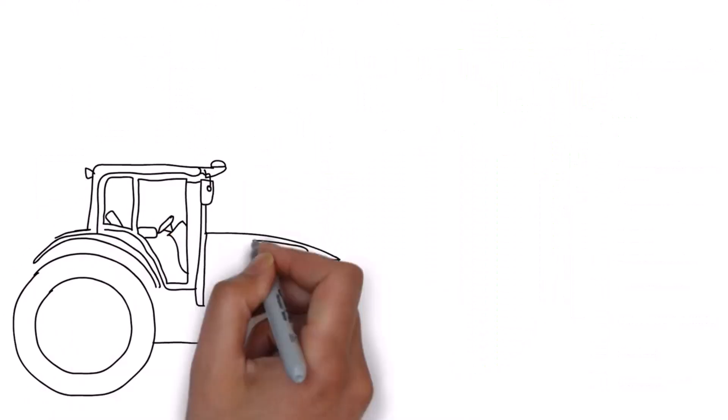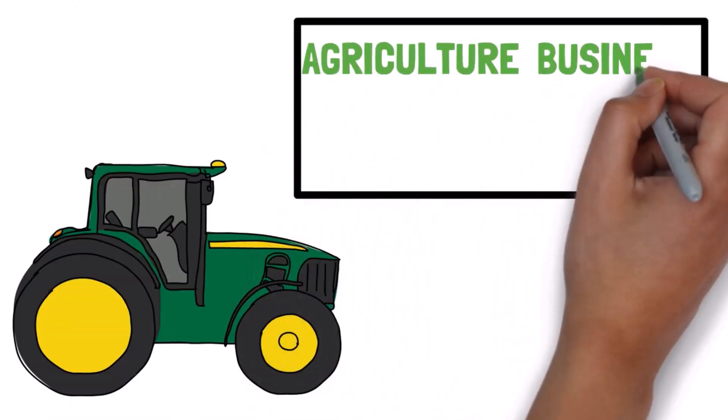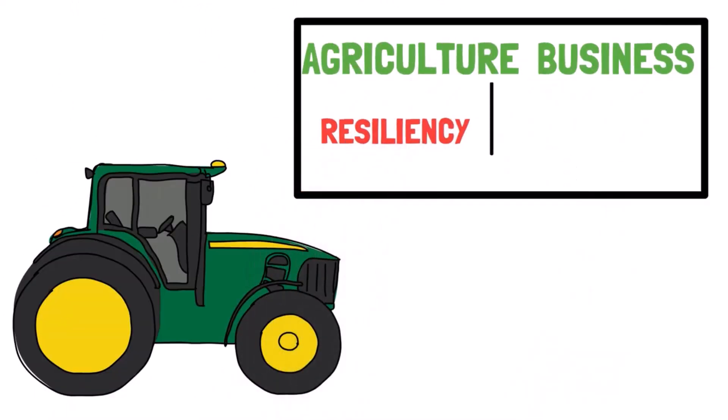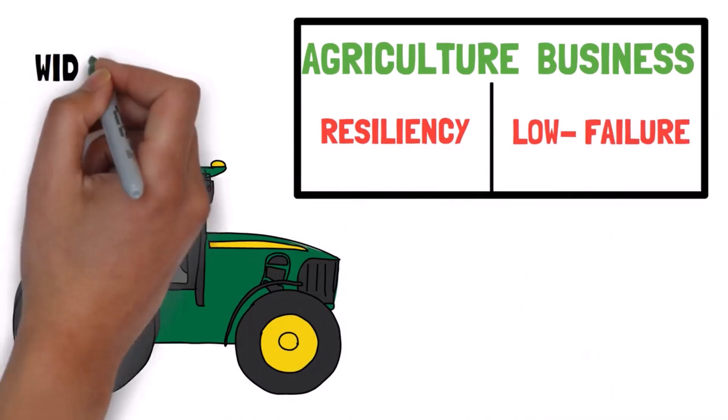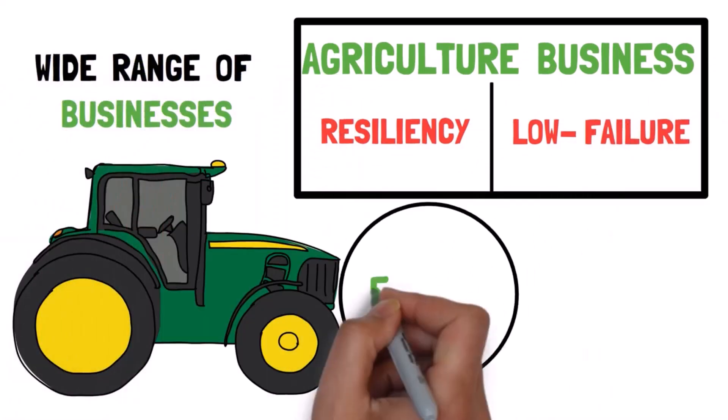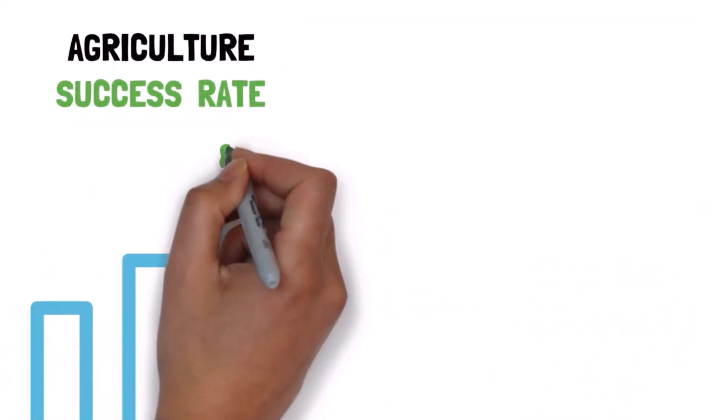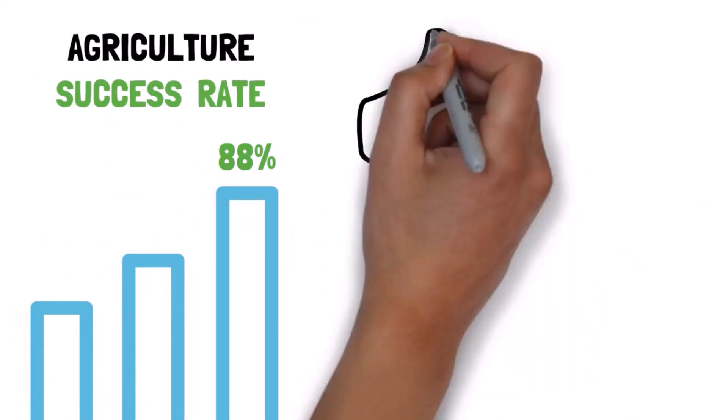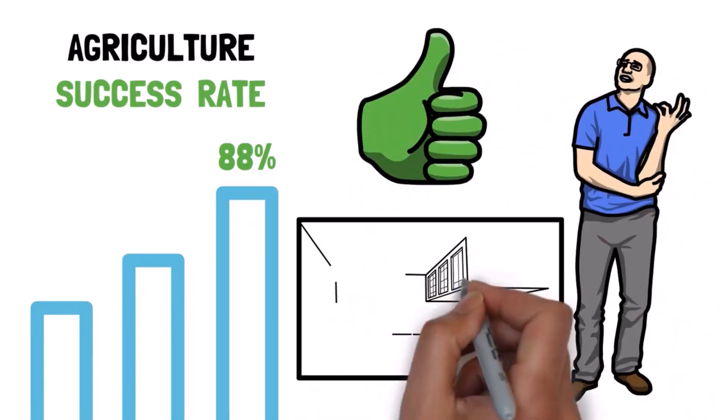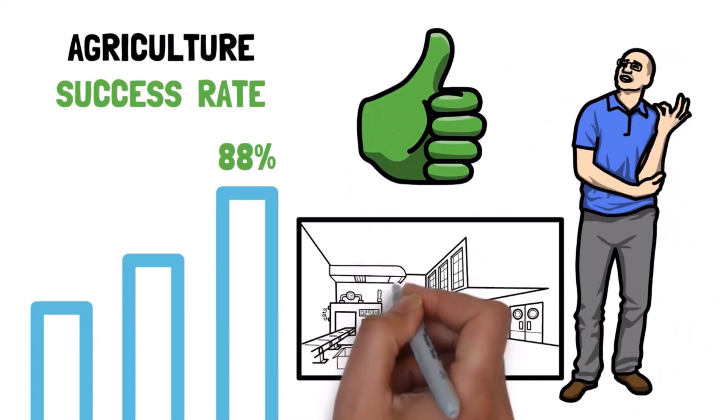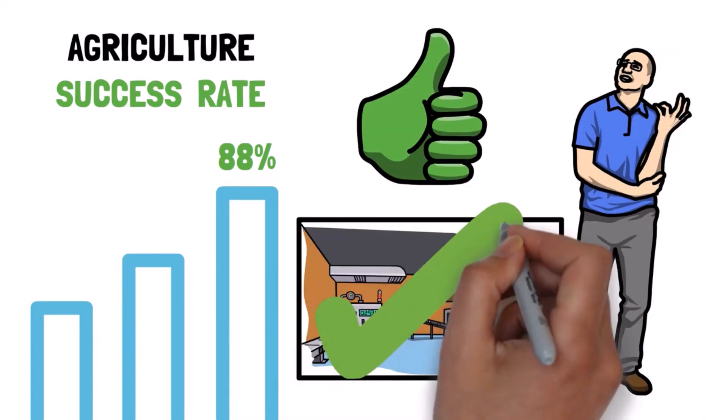In addition to real farm activities, agriculture businesses are known for their resiliency and low failure rates. These can include a wide range of businesses including farms and a variety of associated businesses. Agriculture firms have a phenomenal success rate of 88%. If you have a green thumb and an interest in farming or other agriculture-related industries, this might be the right opportunity for you.